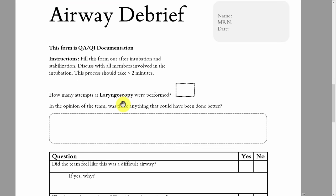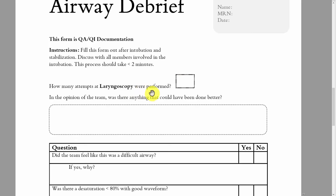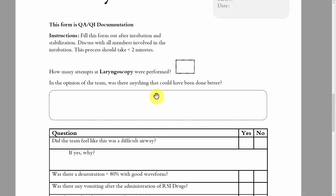The debrief happens after every RSI and takes about two minutes. Nurses run the questions; docs and nurses provide the answers. How many attempts at laryngoscopy were performed? An attempt is defined as an entrance and exit of a blade — if they stick it in and take it out, that's one attempt. If the blade goes in again, that is when the second attempt occurs.